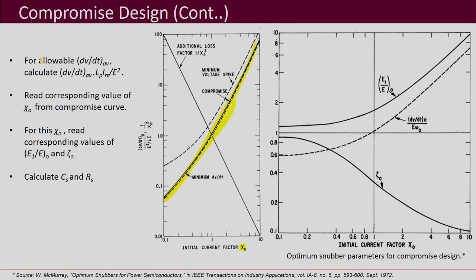First, decide the allowable dv/dt average for your device, then normalize it — divide by E²/(LP·IRR), which means multiplying by LP·IRR/E². Find the corresponding value of chi0 on the compromise curve. Once chi0 is found, note it on the other graph to read off the corresponding E1/E0 and zeta0. With zeta0 and chi0 known, you can calculate the required capacitance Cs and resistance Rs for the snubber design.